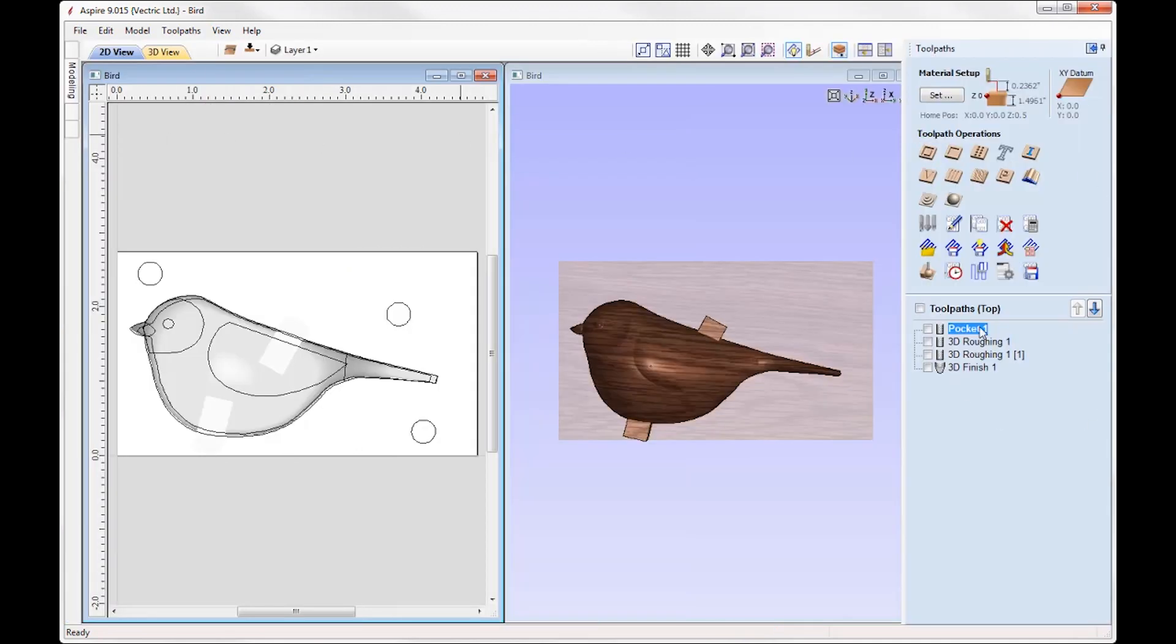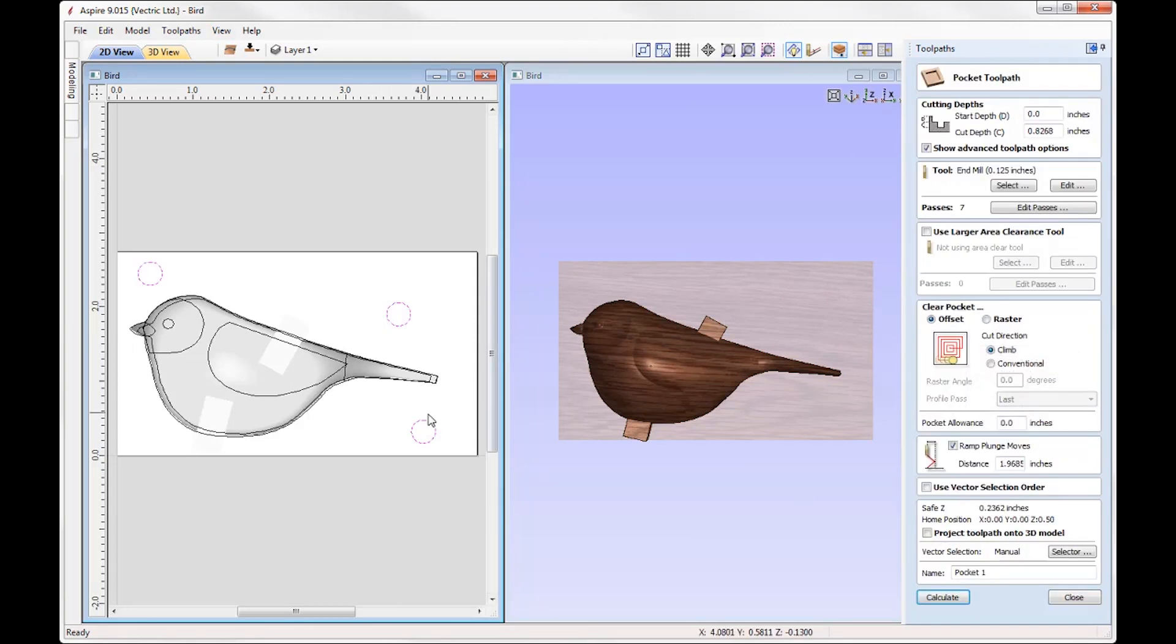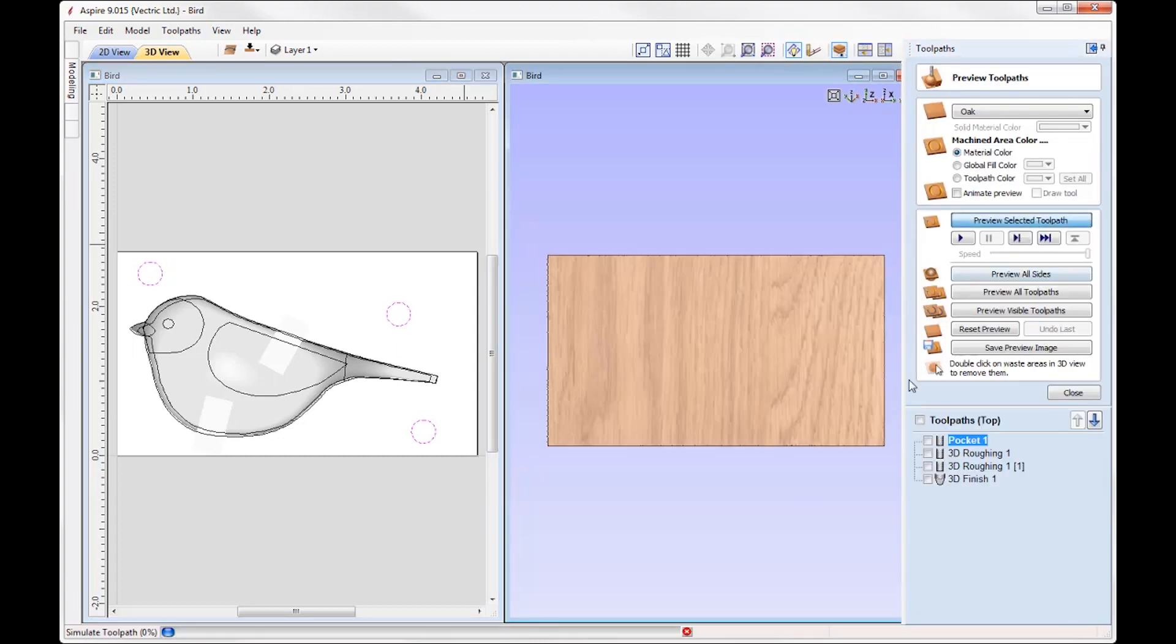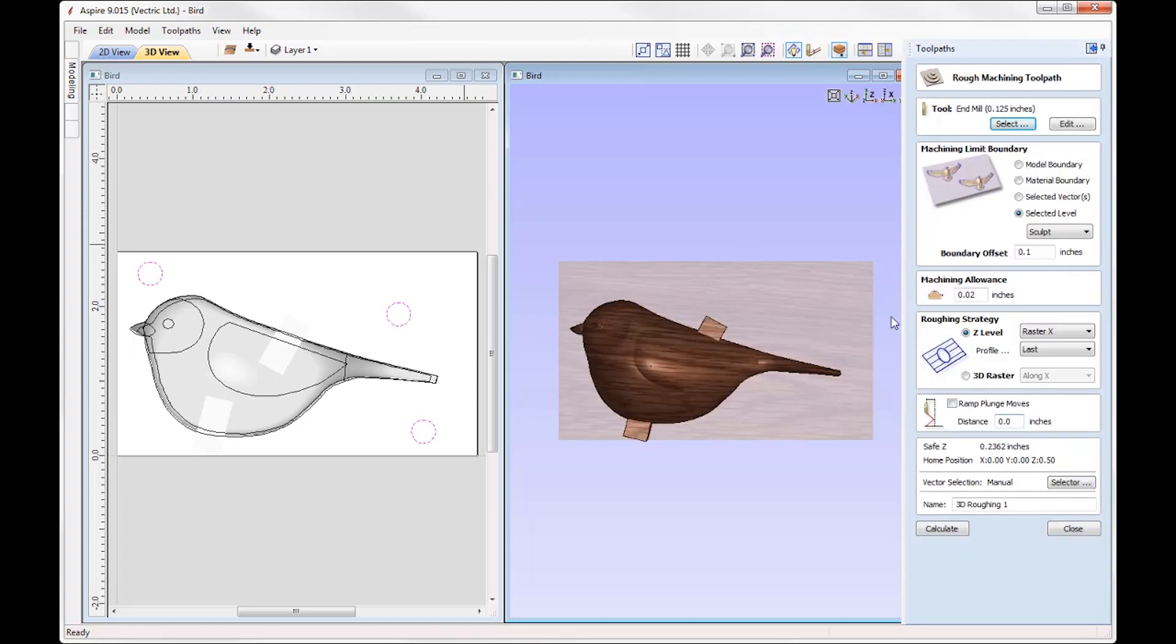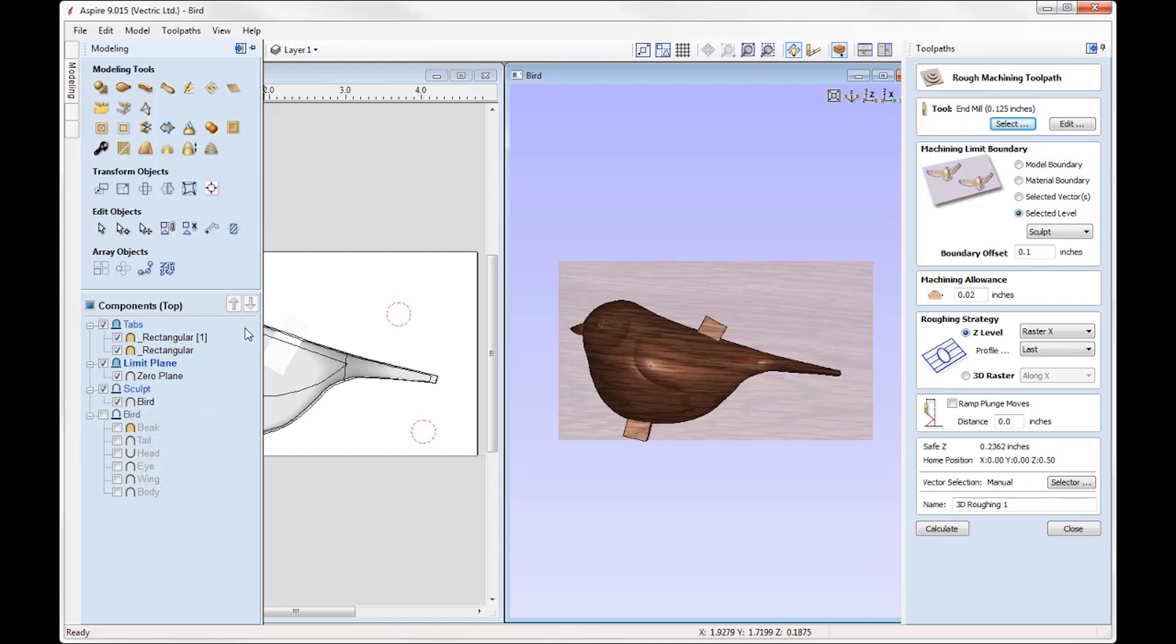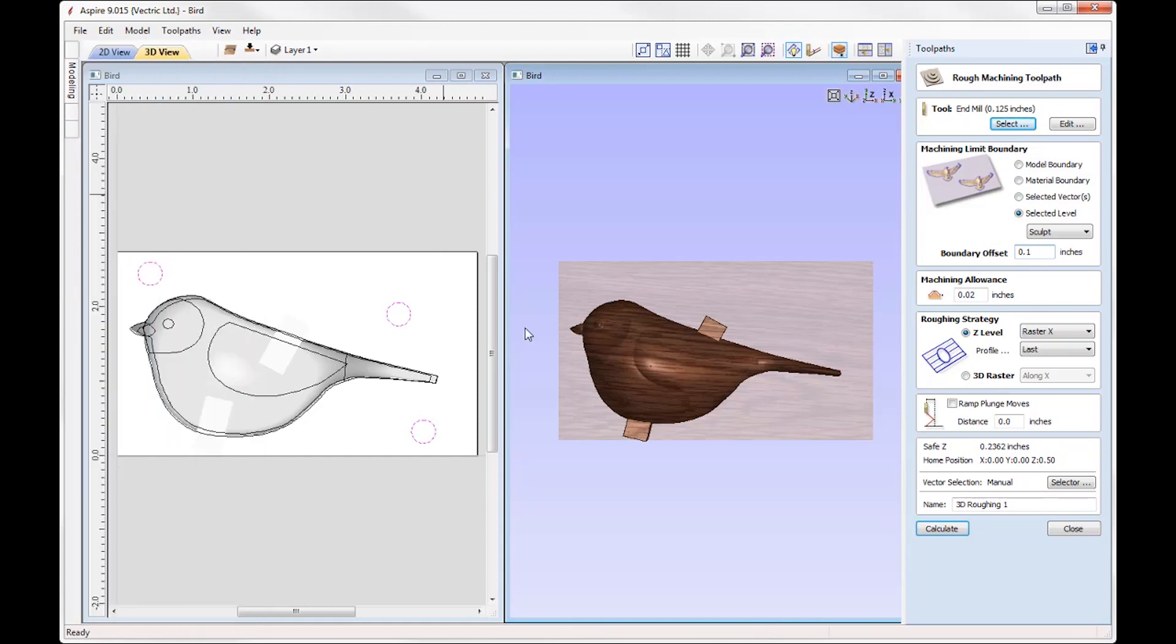So over in the toolpaths tab you can see we've got a pocket toolpath that's for the dowels. You can see we're just cutting partially into our material block. Let's just preview that. You can see that there. Then we have two lots of roughing toolpaths. Let's take a look at those. Why have we got two? So the first one we've got a 3D roughing toolpath using an eighth inch end mill. We're doing it on the selected level which is the sculpt level. So that's just the bird. We're ensuring that we're only cutting away at the outline of the bird, with a little bit of an offset in there just to ensure that the tool rolls past the edge of the model. A machining allowance of 0.02. So we're just going to leave a little bit of skin on there for our finishing tool to cut away at.